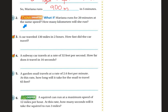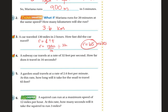What if Marina runs for 20 minutes at the same speed? How many kilometers will she run? When I plug in that number, I get 3.6 kilometers. Next problem: a car travels 130 miles in 2 hours. How fast did the car go? We're trying to find the rate, so I use the formula R equals D divided by T. R equals 130 miles divided by 2 hours. 130 divided by 2 is 65, so the car travels 65 miles per hour.